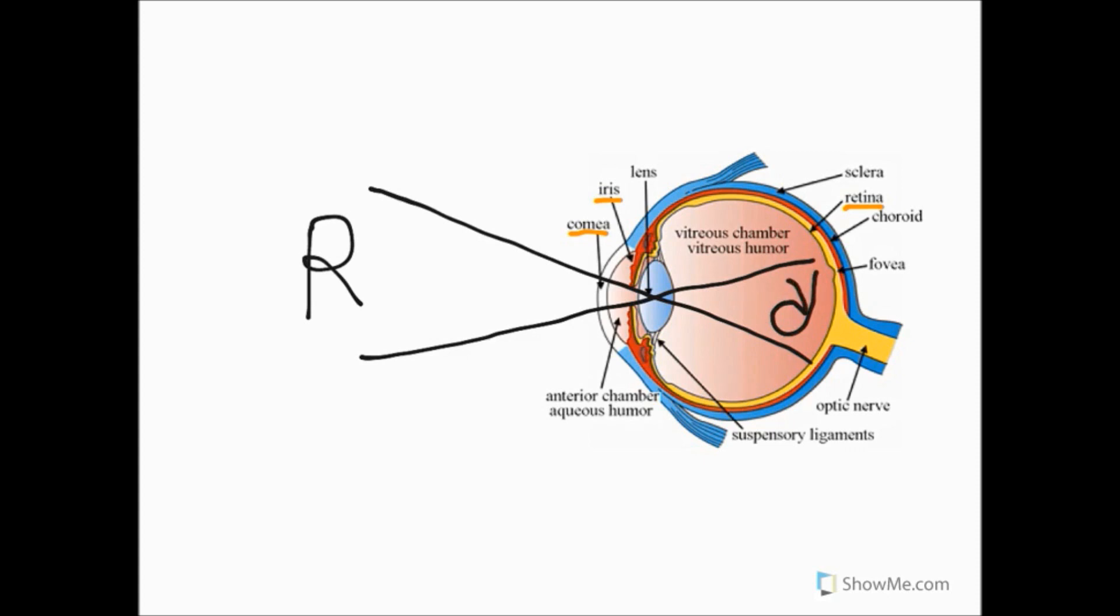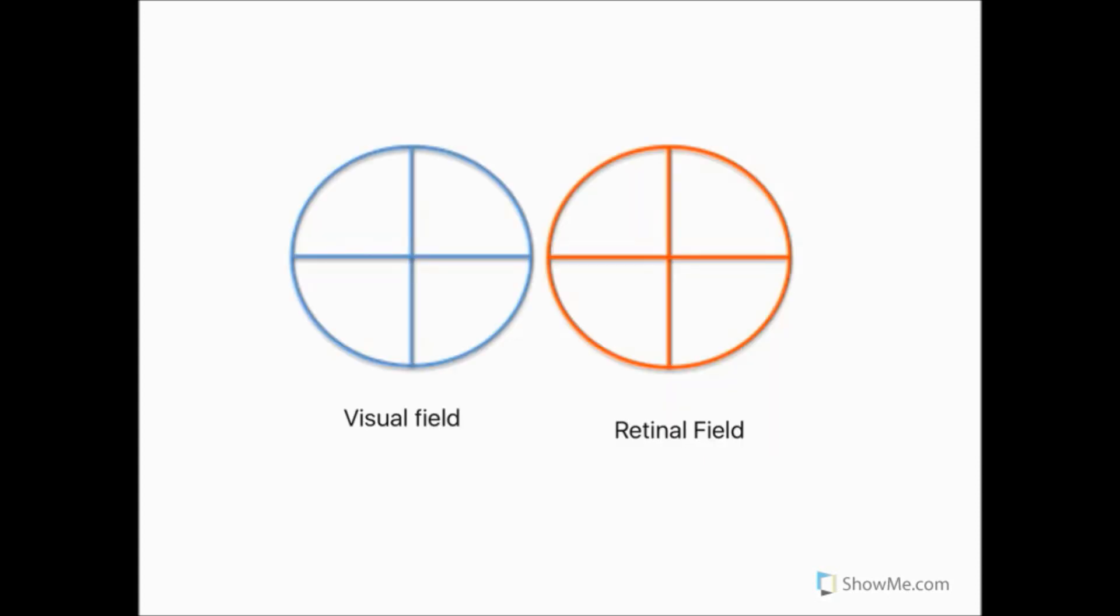So if we have a visual field with four quadrants labeled A, B, C, and D, due to the refraction of light through the eye, these quadrants would be labeled D, C, B, and A in the retinal field. This becomes important later, as the fibers from each retinal field quadrant will become separated.